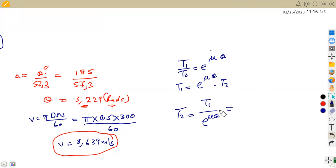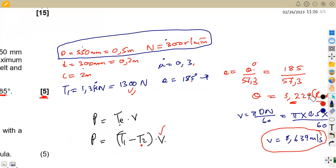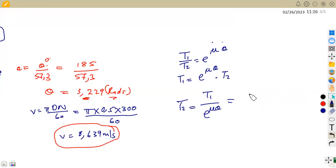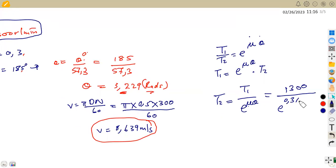T1 is equivalent to e to the exponent of mu theta times T2. So to find T2, we are going to divide, that's T1 over e to the exponent of mu. You can transpose this one. So that means we can substitute our information. T1 is the one that we are given the maximum allowable tension, which is 1300. So that's 1300 over e to the exponent, the coefficient of friction, which is 0.3 times theta in radians, which is the angle of contact here in radians, 3.229. So that's our T2 guys. We can have it from our calculator, which is 493.449 newton.